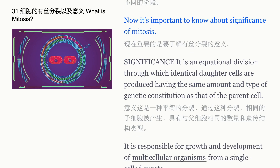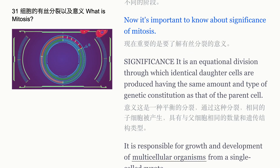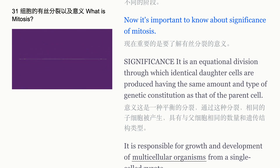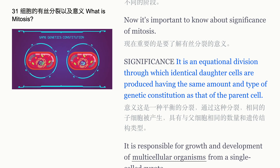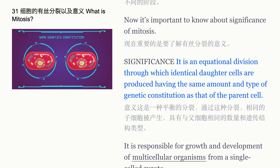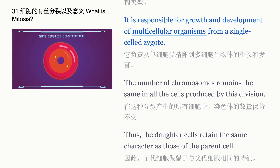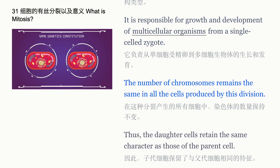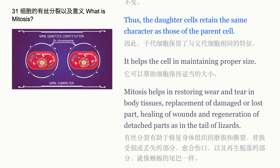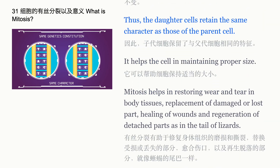Now it's important to know about the significance of mitosis. It is an equational division through which identical daughter cells are produced, having the same amount and type of genetic constitution as the parent cell. It is responsible for growth and development of multicellular organisms from a single-cell zygote. The number of chromosomes remains the same in all cells produced by this division, so daughter cells retain the same character as the parent cell.